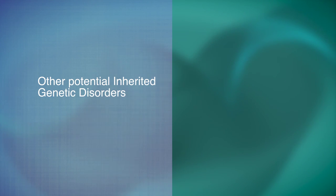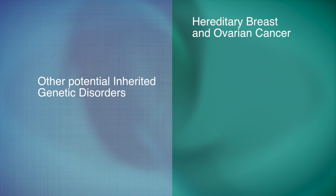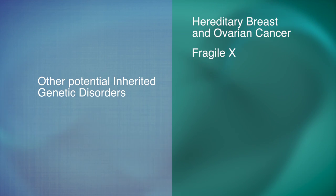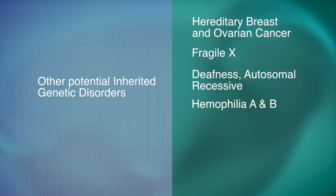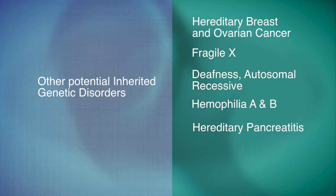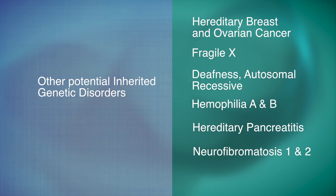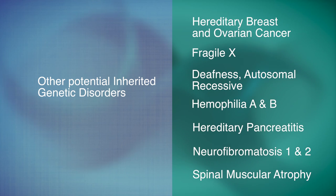Other potential inherited genetic disorders that may not be ethnically related by hereditary include hereditary breast and ovarian cancer, fragile X, deafness autosomal recessive, hemophilia A and B, hereditary pancreatitis, neurofibromatosis, and spinal muscular atrophy.